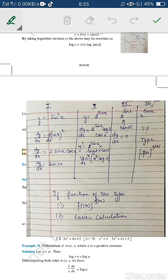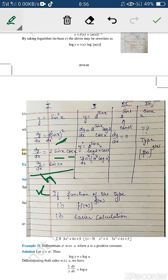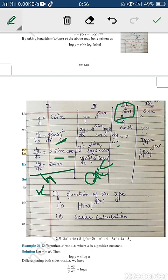For y = sin²x: apply the power rule — 2·sin x · cos x = sin 2x. For y = 2^(sin x): this is a^x type, so derivative is 2^(sin x) · log 2 · cos x. For y = 2^(sin 1): there is no x, so this is a constant — derivative is 0. For y = x^(sin x): we have not handled function raised to power function before. This type is solved using logarithmic differentiation.